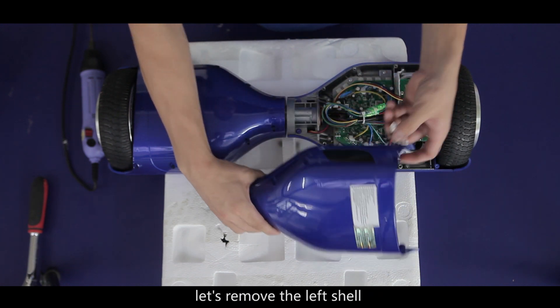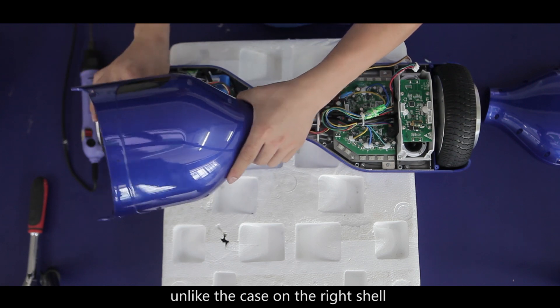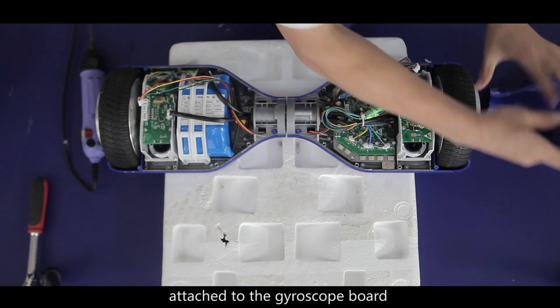With that done, let's remove the left shell. Unlike the case on the right shell, the left side has only one LED light wire attached to the gyroscope board.